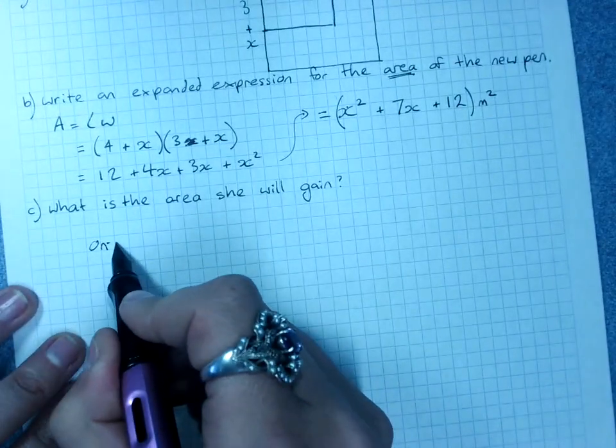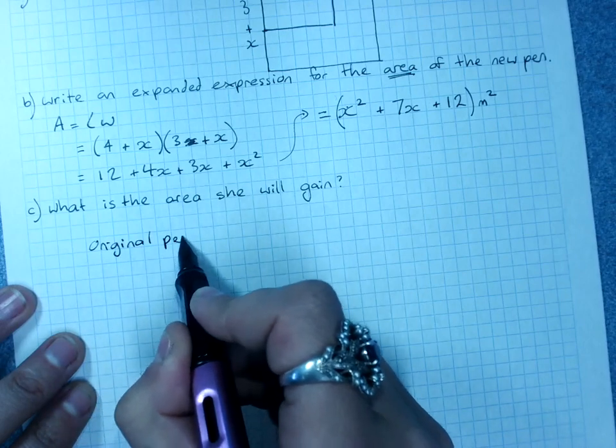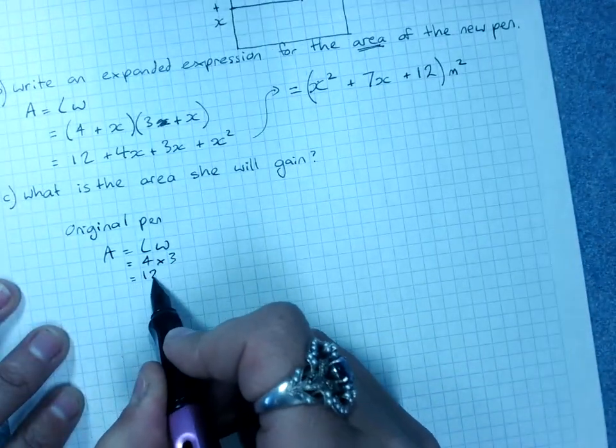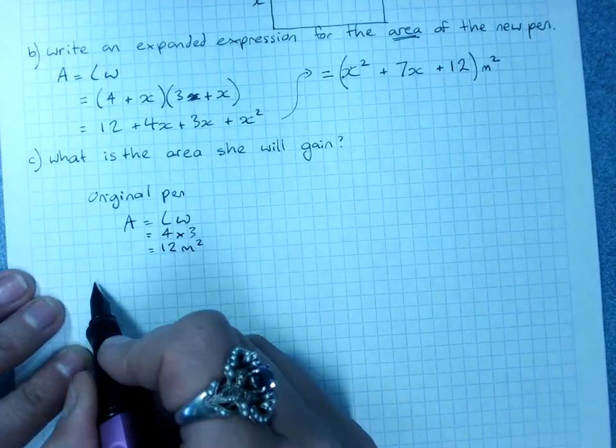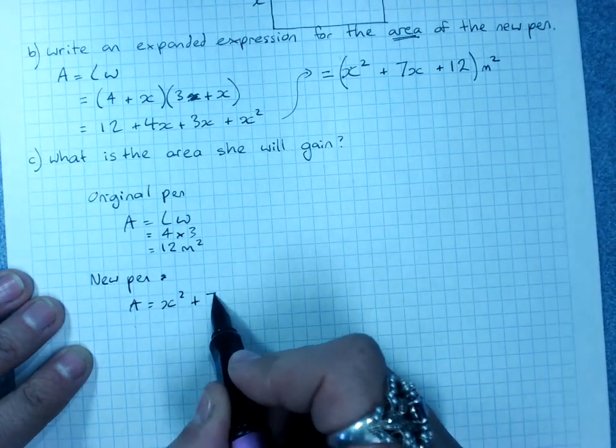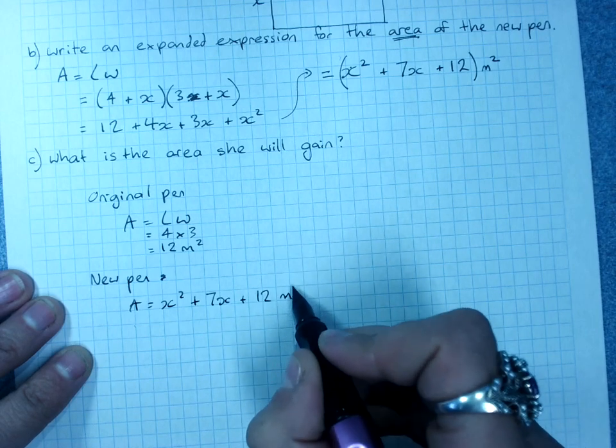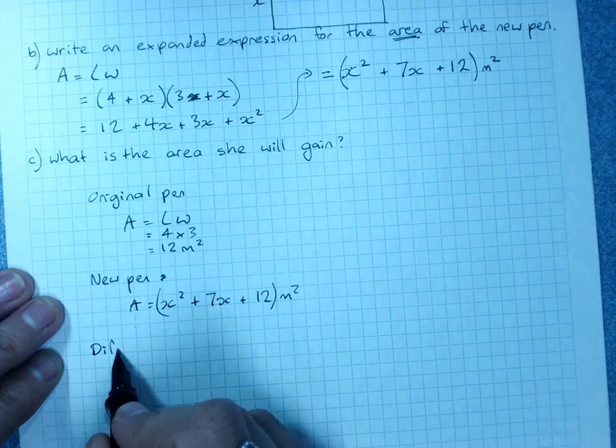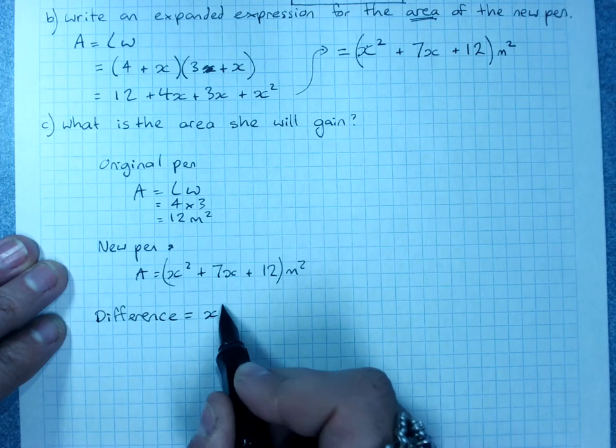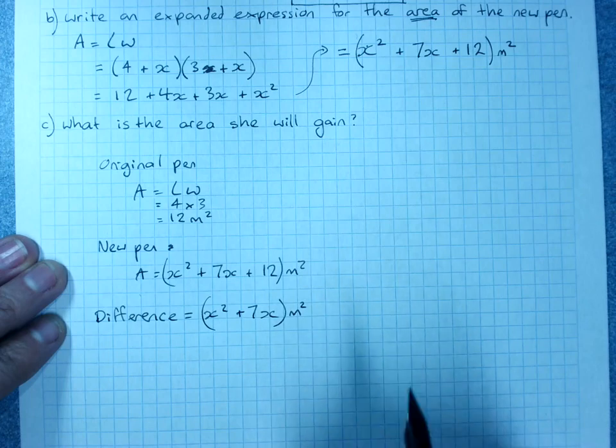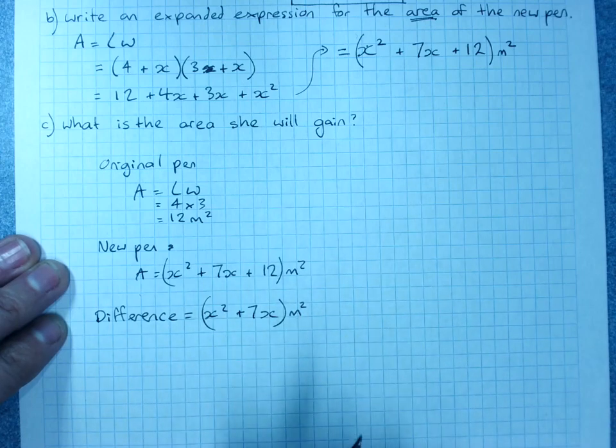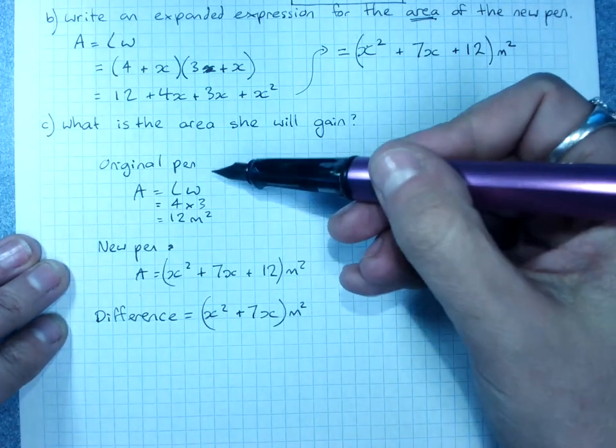And what is the area she will gain? Her original pen. Show proper working. Area equals length times width equals four times three equals twelve meters squared. New pen. Area equals x squared plus 7x plus twelve meters squared. The difference is x squared plus 7x meters squared. Show nice working. Don't just write x squared plus 7x. I won't be happy. You've shown me how you got this.